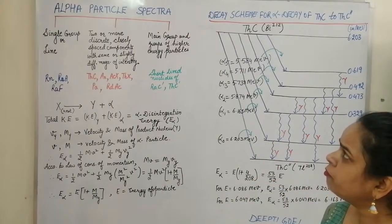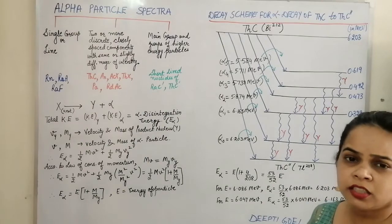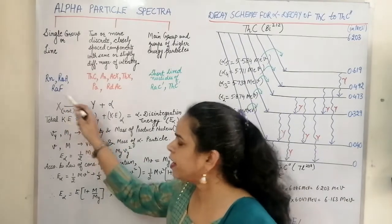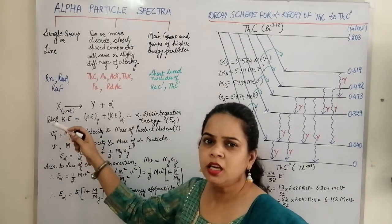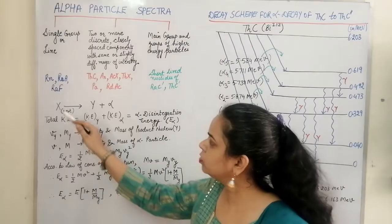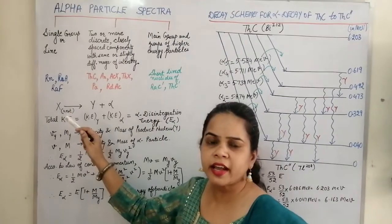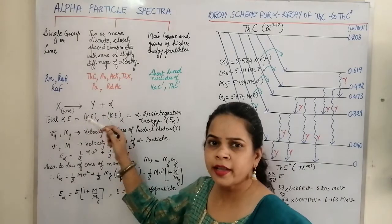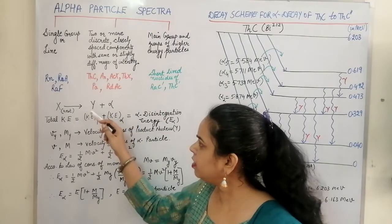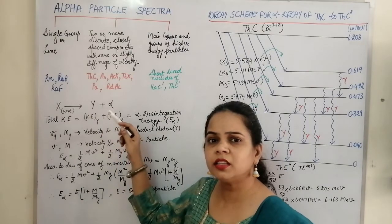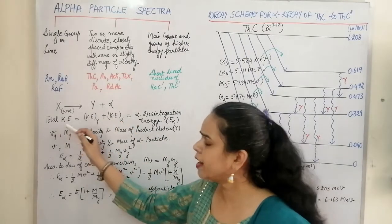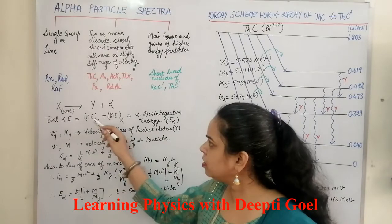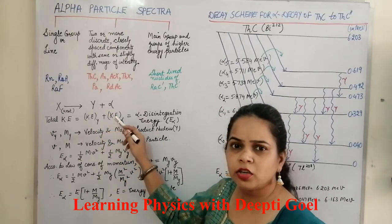Considering the alpha particle spectra where the parent nuclei disintegrates into the daughter nucleus and an alpha particle, and assuming the parent nucleus is at rest, we calculate the kinetic energy involved. Since the parent nucleide is at rest, its kinetic energy is zero. The daughter nucleus recoils and the alpha particle moves, so the total kinetic energy is the sum of the kinetic energies of the daughter nucleus and the alpha particle.